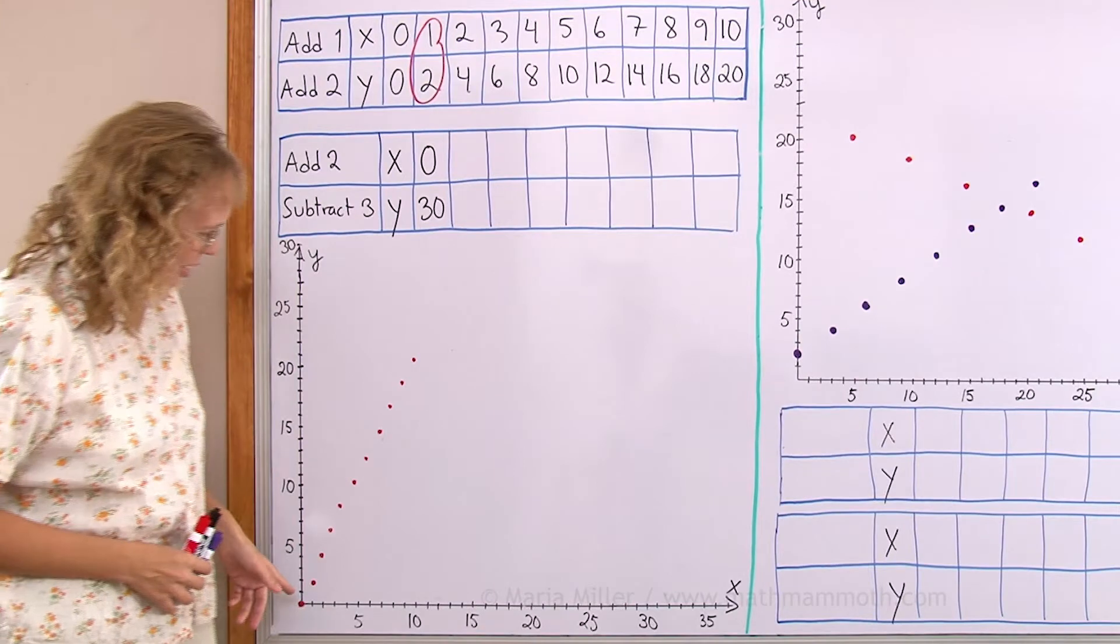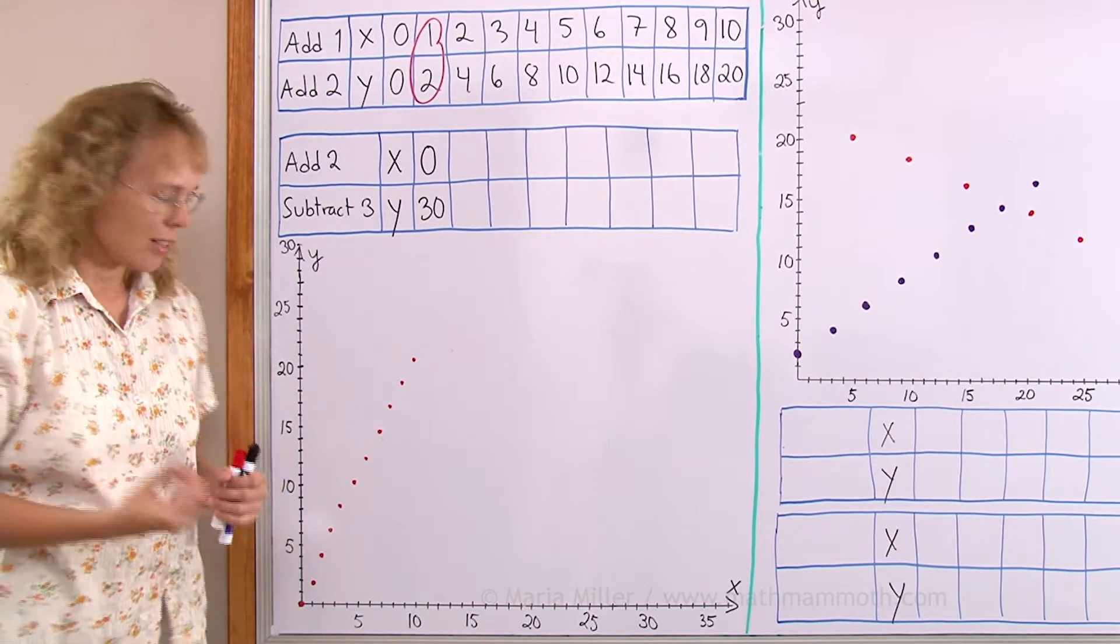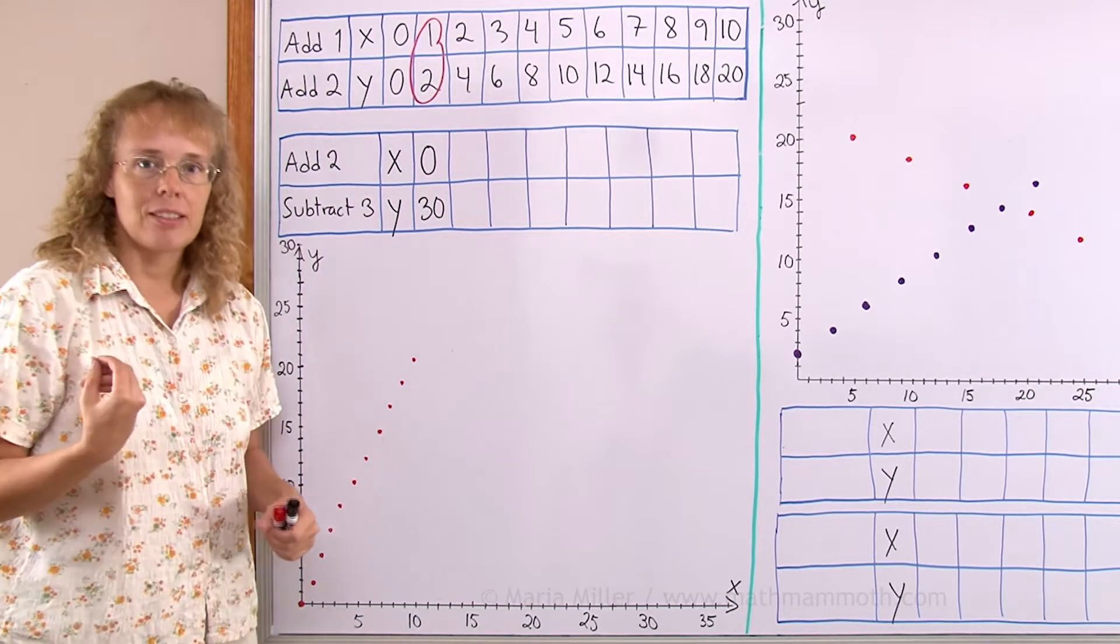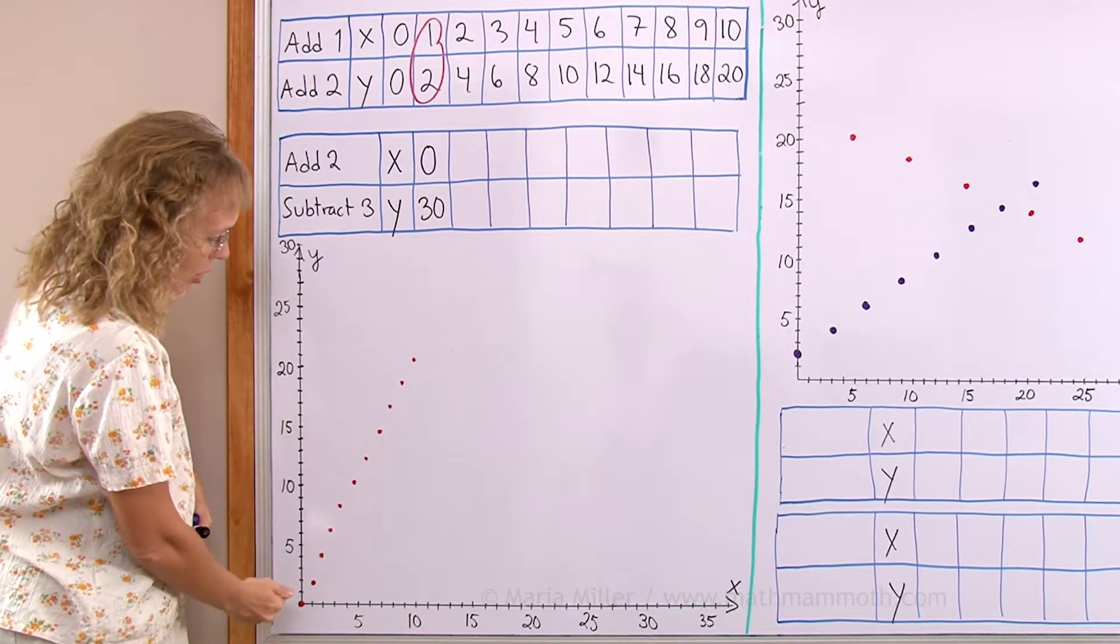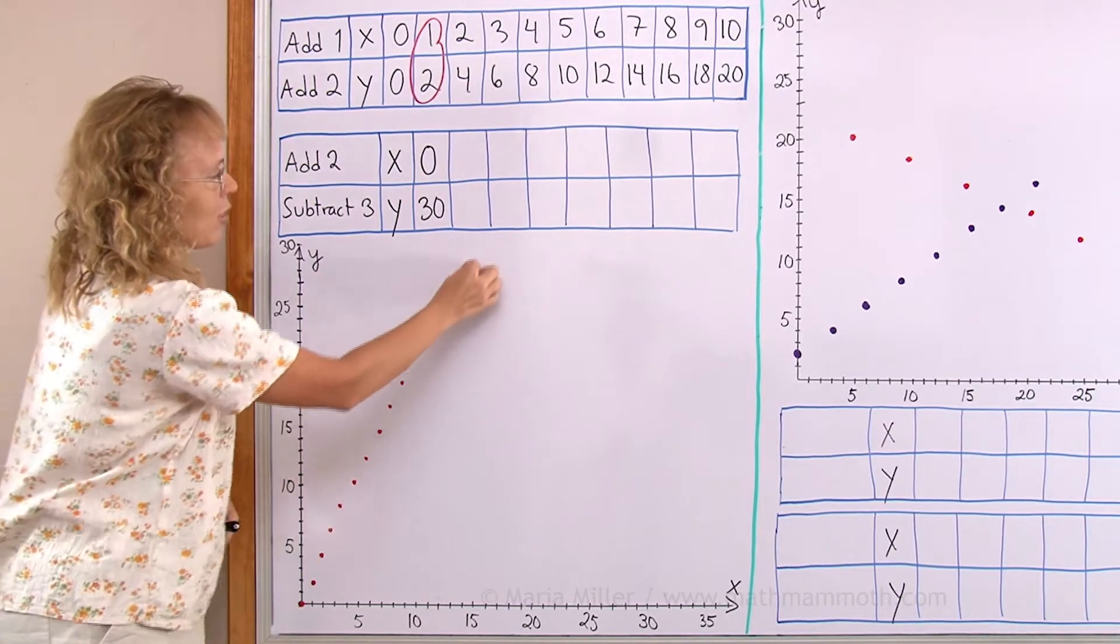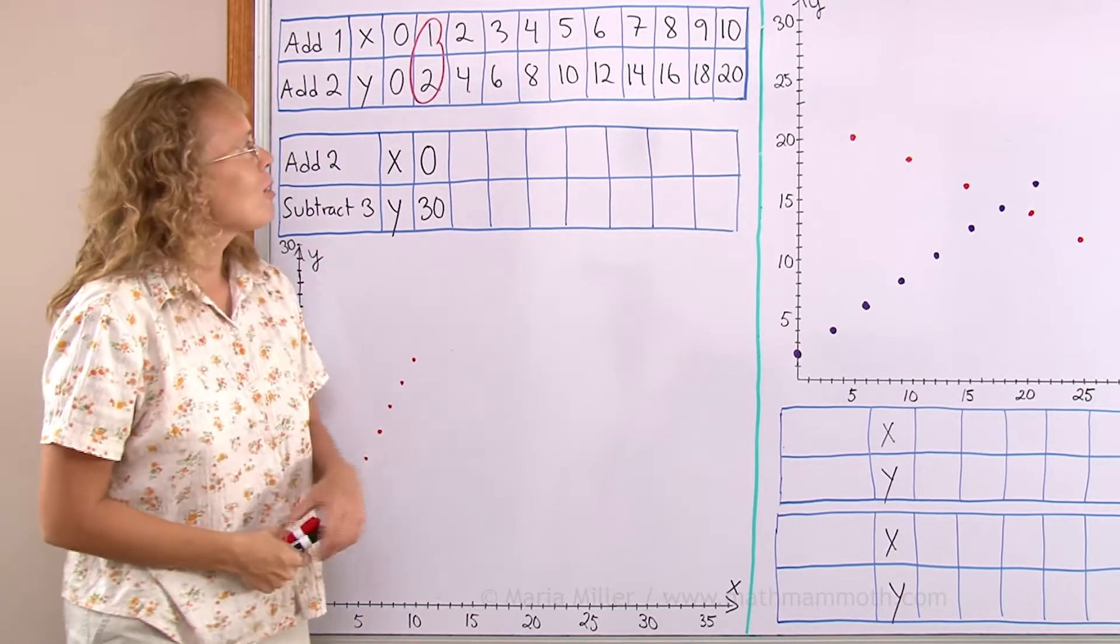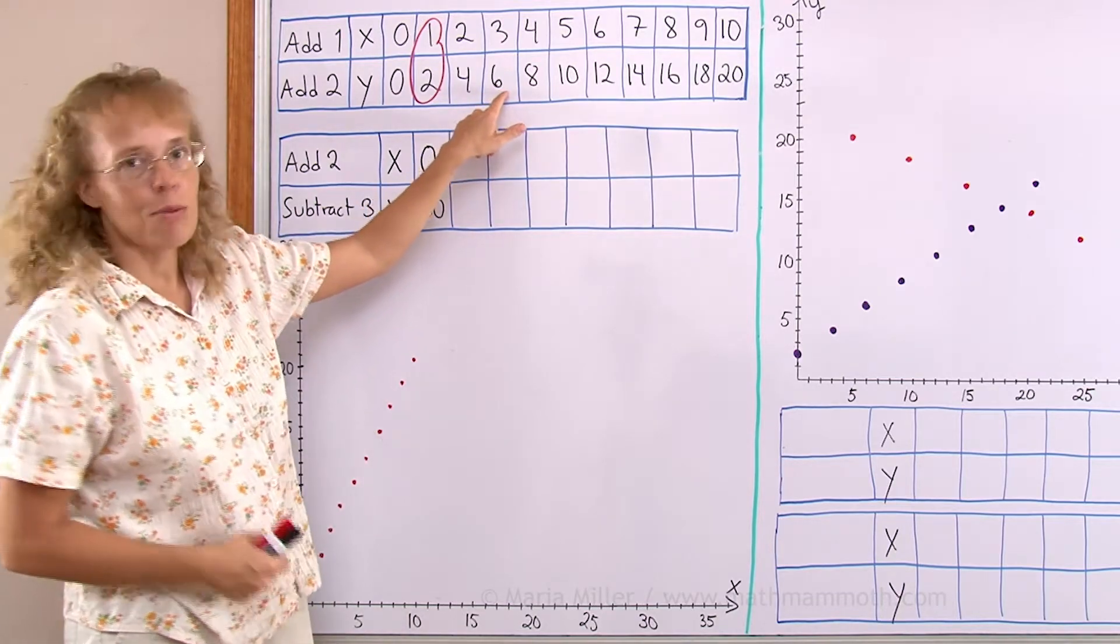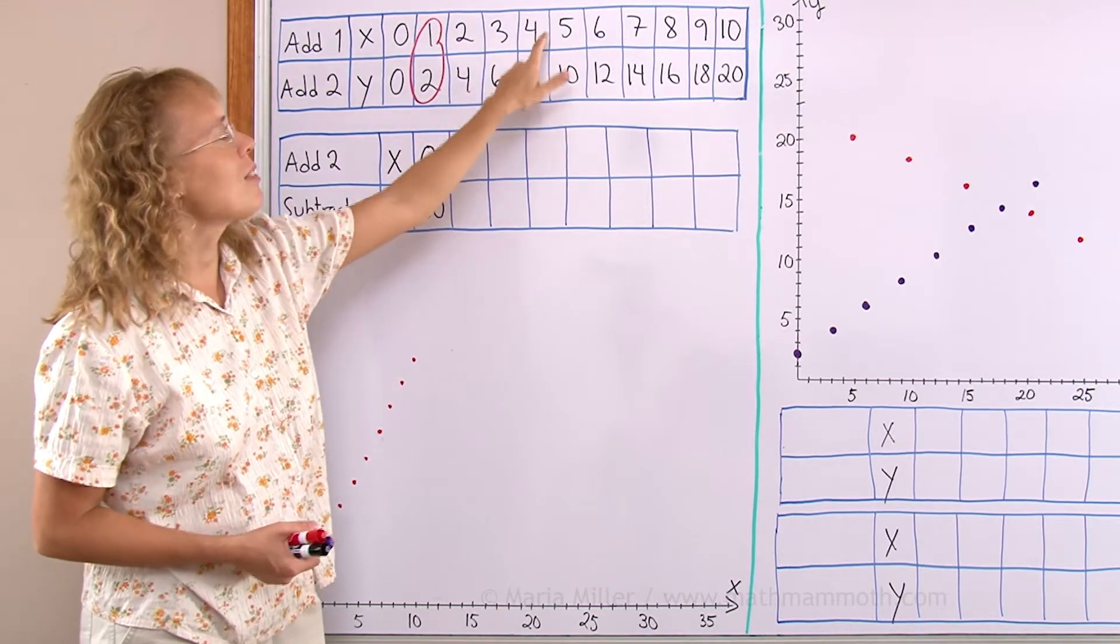Now you can see that they are as if on the same line. They form a linear pattern we say, because these points are on the same line and you could continue it this way. You probably noticed also that in each case the y-coordinate is double the x-coordinate: 3 and 6, 4 and 8, 5 and 10.